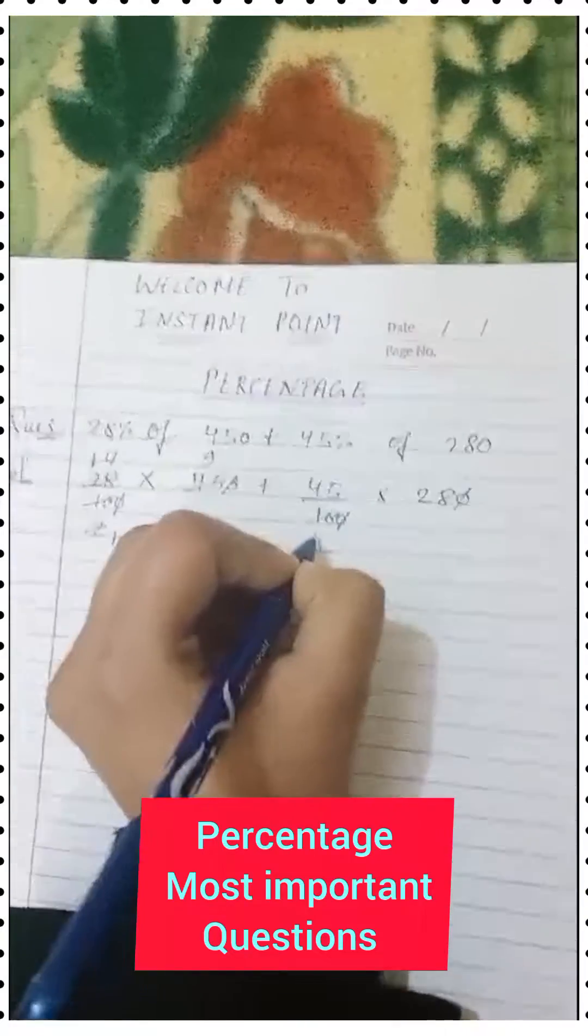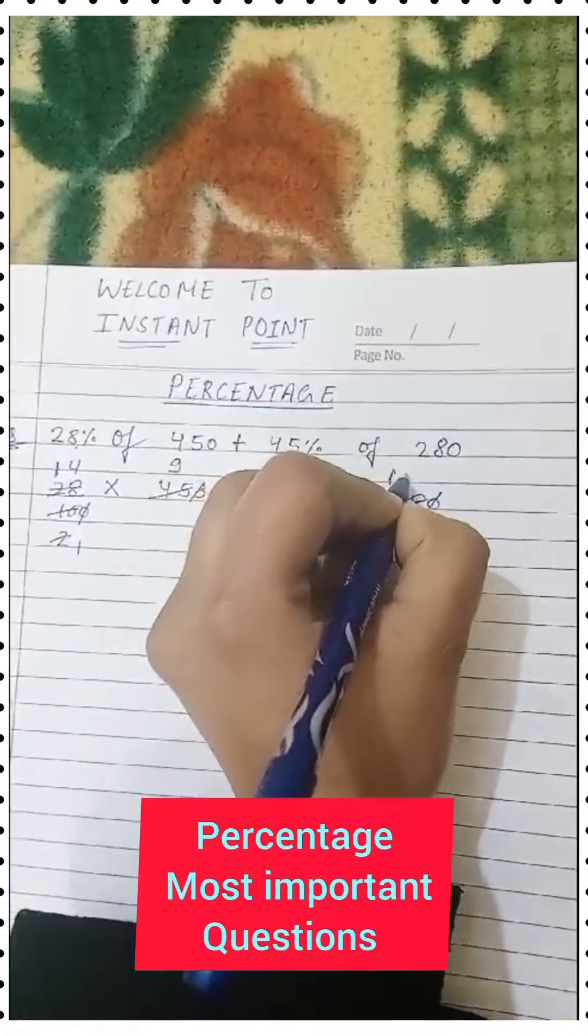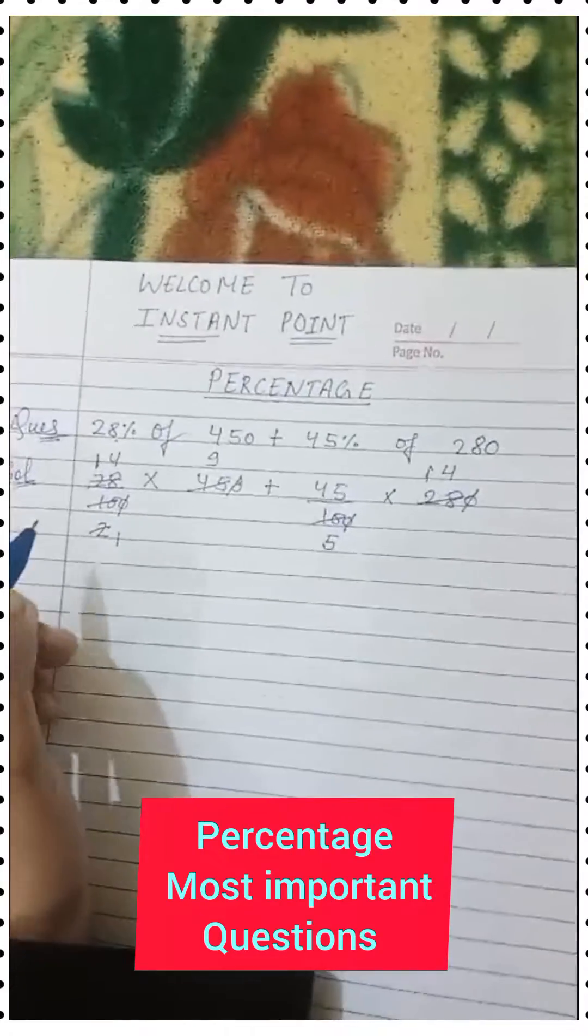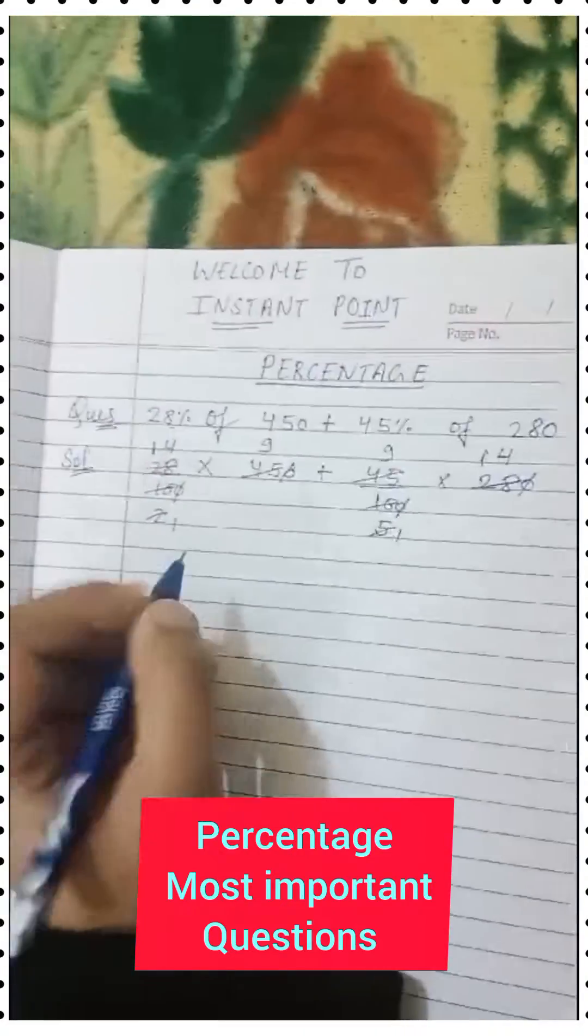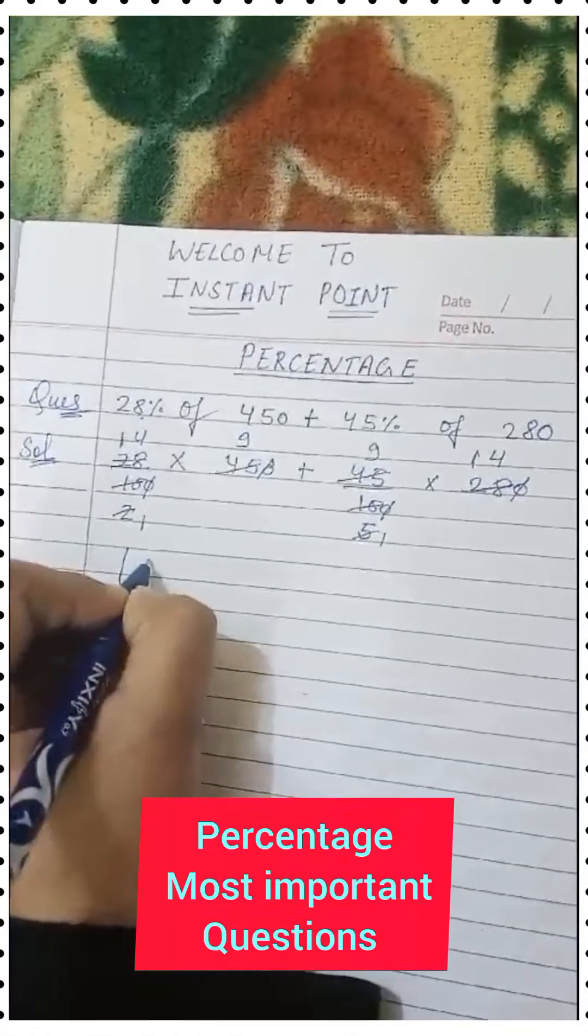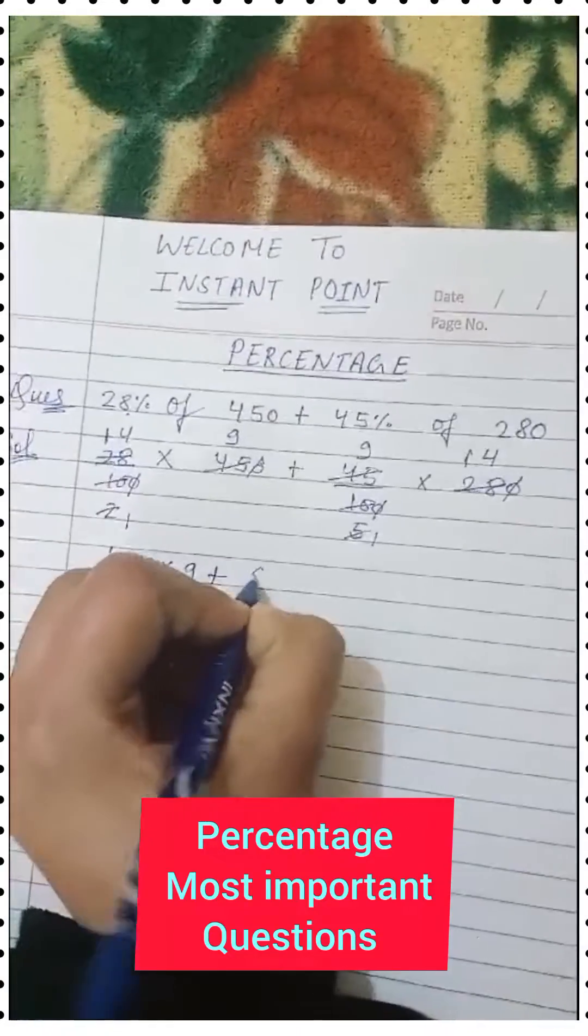We cancel this with 2. Then 5×1=5, 5×5=25, 5×9=45. So what's left is 14×9 plus 9×14.